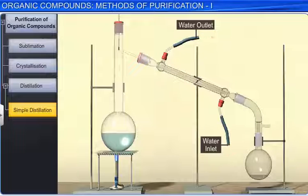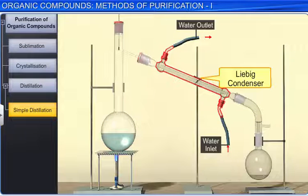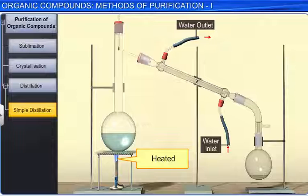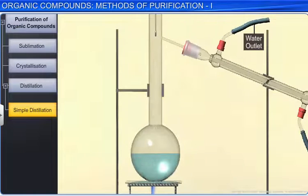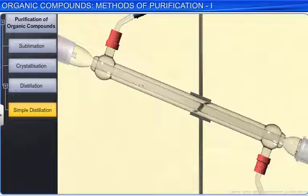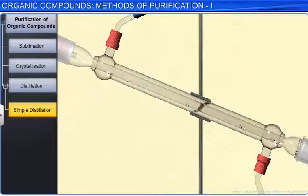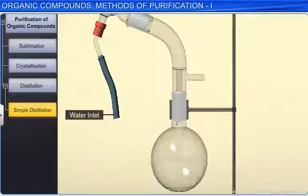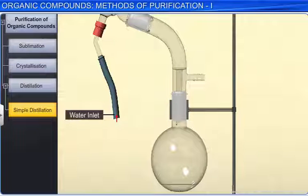In this method, the liquid mixture is taken in a round bottom flask which is fitted to a Liebig condenser and heated. On heating, the vapors of the liquid with the lower boiling point are formed first, and at a constant temperature all of the liquid changes into vapors. The vapors are condensed by using a condenser and the liquid is collected in a receiver placed at the open end of the condenser. The vapors of the liquid with higher boiling point that are formed later are also condensed and the liquid is collected separately.